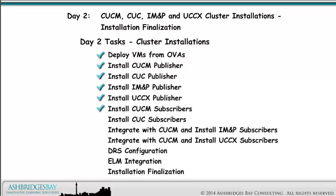We install our CUCM, CUC, IM&P, and UCCX subscribers. We activate the services we need in the CUCM cluster when we install the IM&P and UCCX subscribers. We integrate IM&P and UCCX with CUCM, configure DRS for all four applications, and integrate CUCM and CUC with ELM. Final tasks include upgrading VMware tools and configuring virtual machine startup and shutdown.